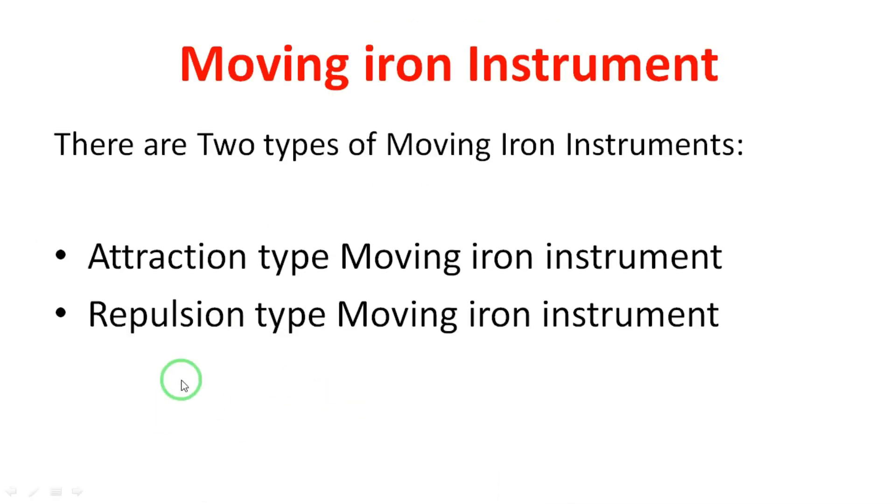The next type is called the Repulsion Type Moving Iron Instrument. If you have no doubts and everything is clear, no problem. Thank you very much.